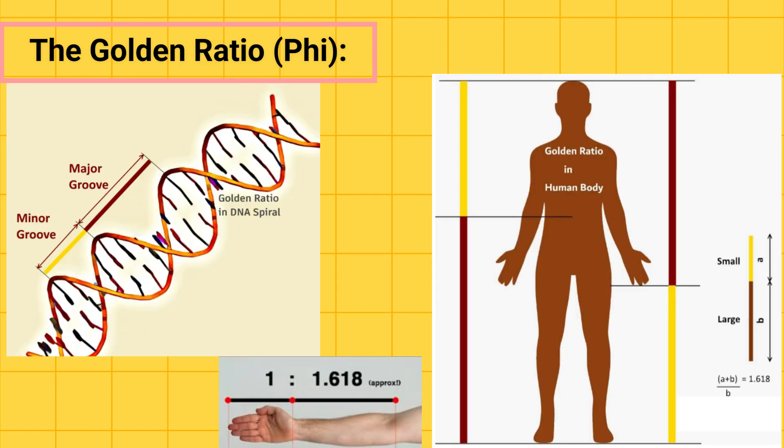In the animal kingdom, the proportions of various animals, including humans, can often be related to the golden ratio. For example, the ratio of the length of the forearm to the hand or the distance from the navel to the floor relative to the height of the body reflects this magic number.